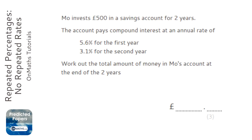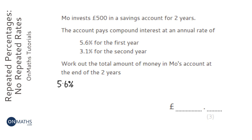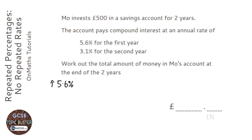There are other ways of doing this question, but I'm going to be using the multiplier method, which I think is the easiest and most versatile. We're starting with a 5.6% increase in money, because that's what compound interest is, and then moving to a 3.1% increase in money.